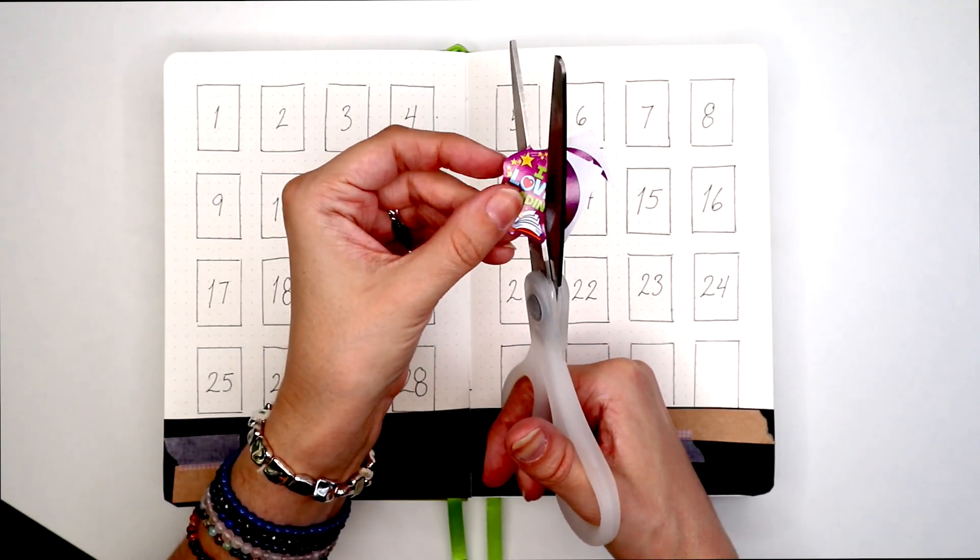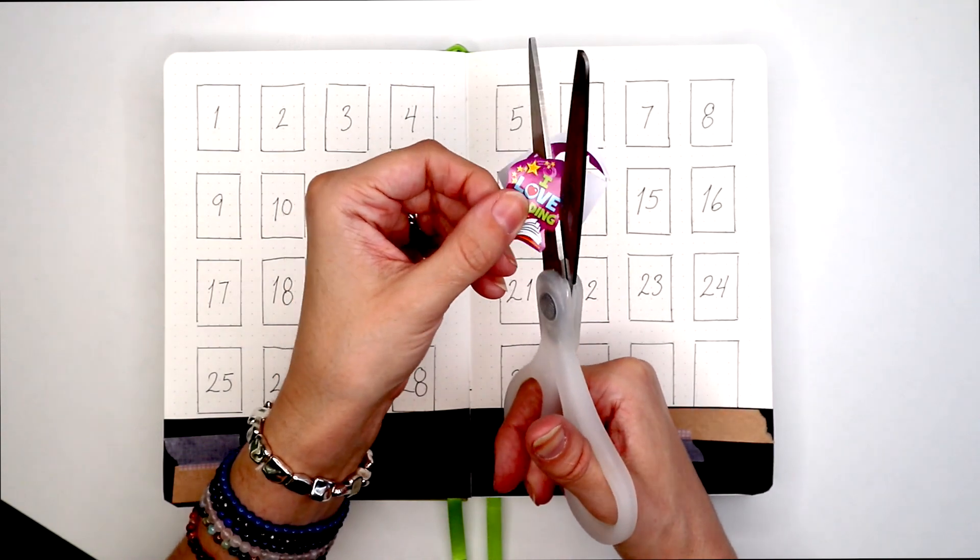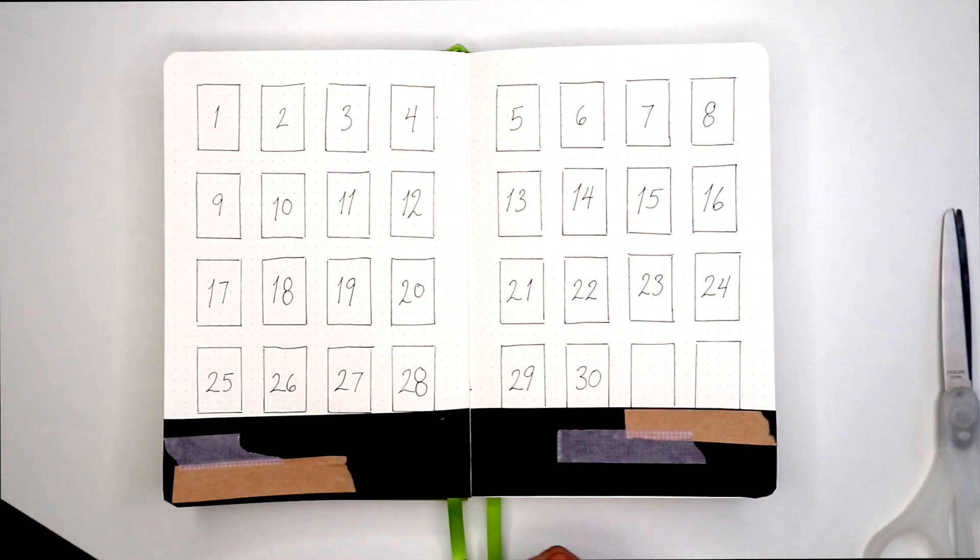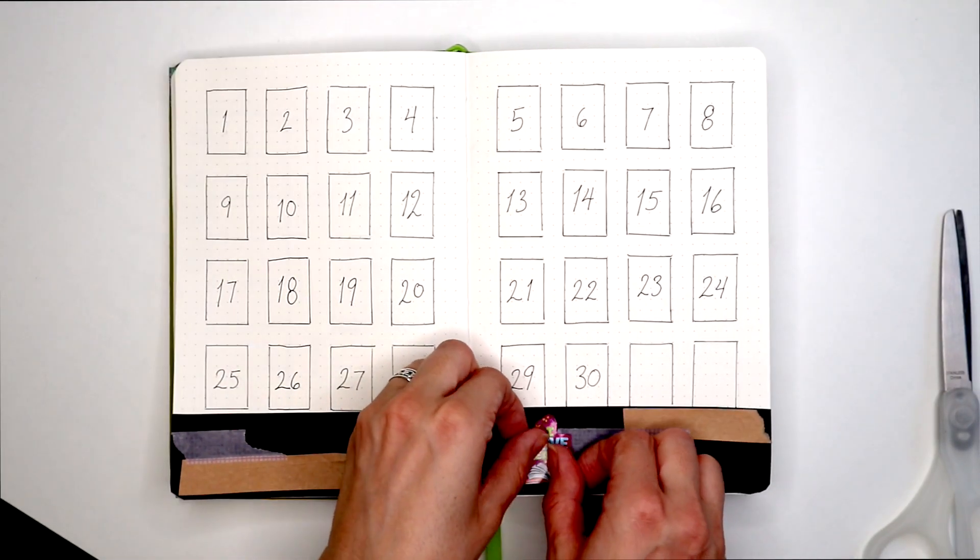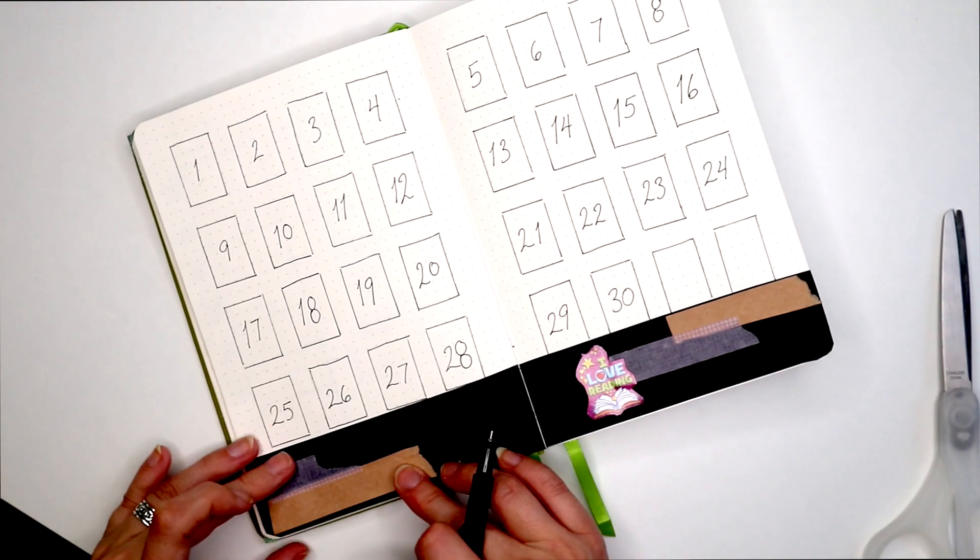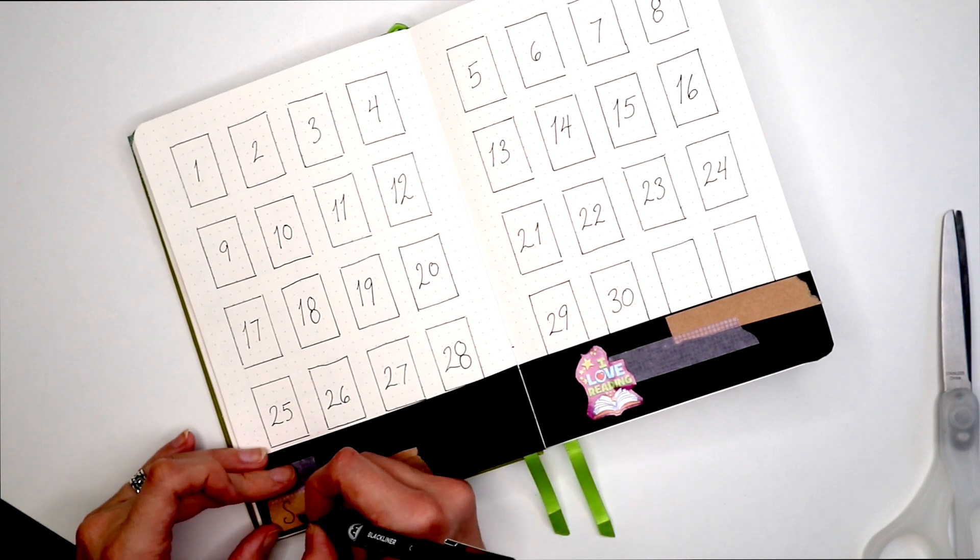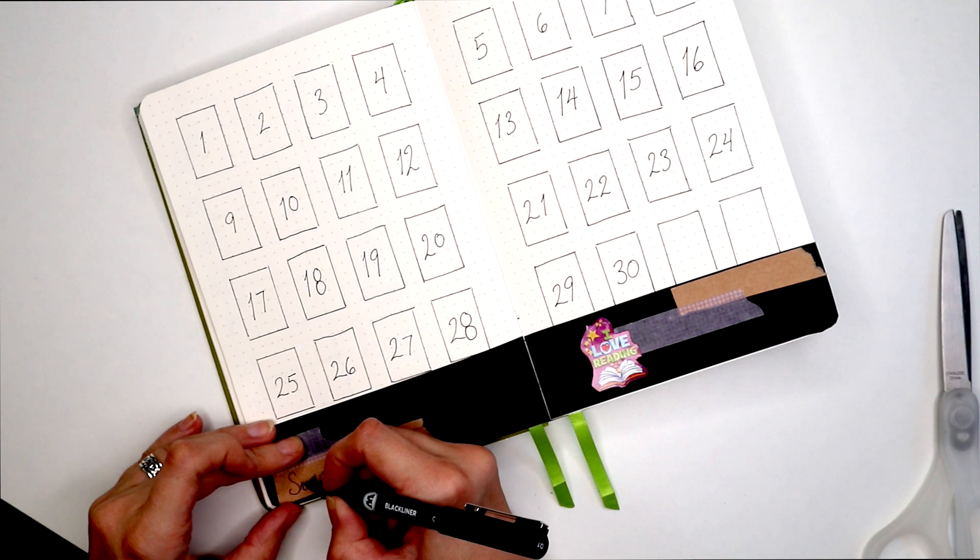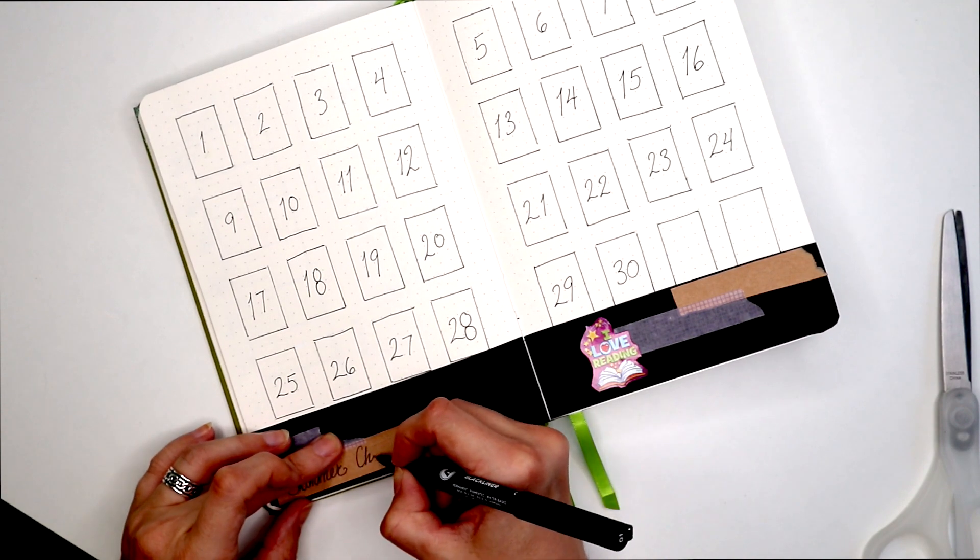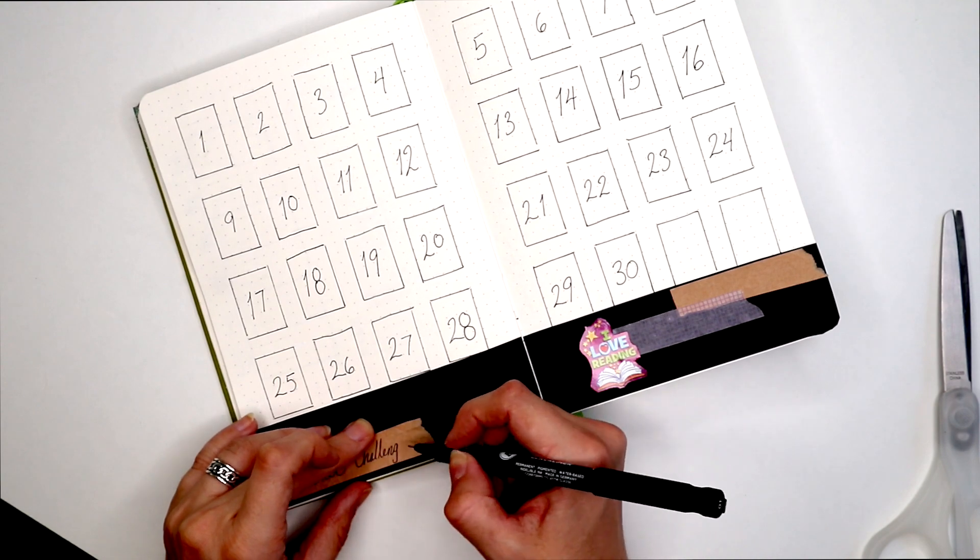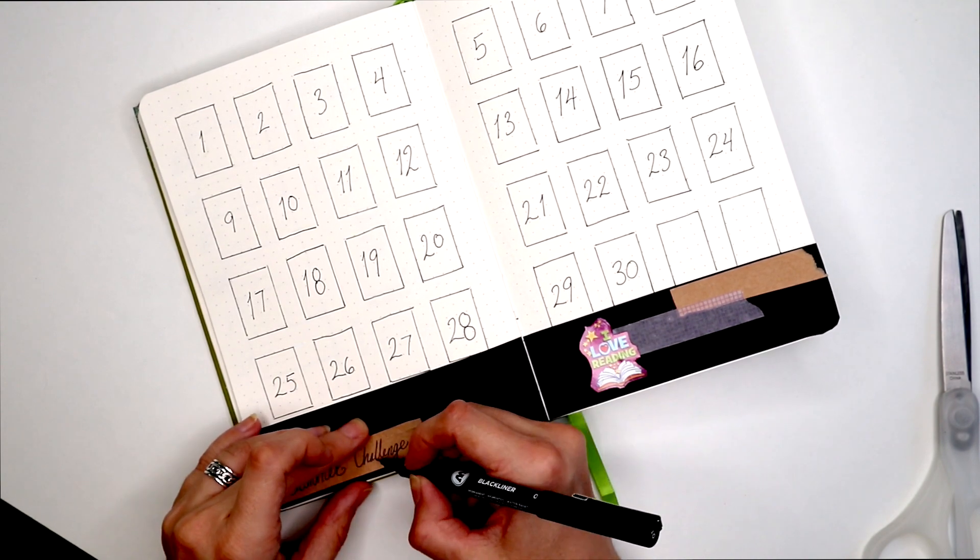As far as supplies that I used I had some black craft paper that I've had for a million years and some brown paper bag that I cut up and I used purple washi tape because I kind of get a little too neutral and grayscale in my bullet journal and I wanted some extra color. I have these I love reading stickers that are circular and I don't really like putting circular stickers in my journals so I brought out the scissors.